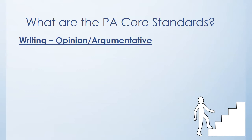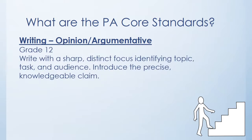Now I will show you how a writing standard changes across the grades, starting with 12th grade. You will notice that we have opinion and argumentative writing noted with this one standard, because the standards do not expect a kindergartner through 5th grader to write an argumentative piece in which they make a claim and then present and refute a counterclaim. This standard relates to focus or topic in writing. In 12th grade, students must write with a sharp focus, identifying the task, purpose, and audience, and they must also introduce a knowledgeable claim.